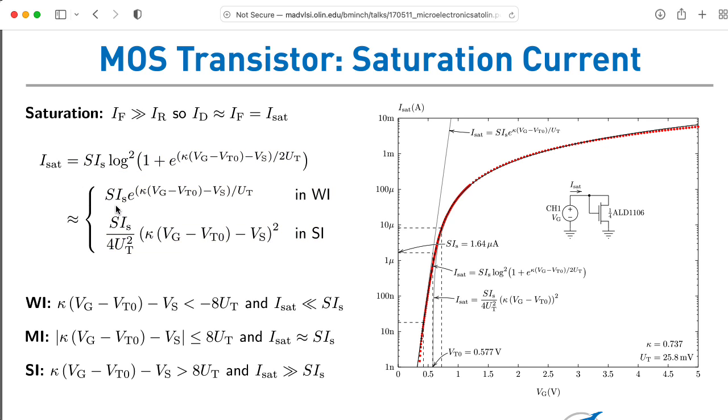In these formulas, IS is called the specific current. VT0 is the threshold voltage. And kappa is a parameter that's called the reciprocal of the subthreshold slope factor. But that's a mouthful, so let's just call it kappa. The thing I want to note here is that this is a little different than the formulas you're probably used to seeing. Notice kappa is multiplying VG, but it's not multiplying VS.